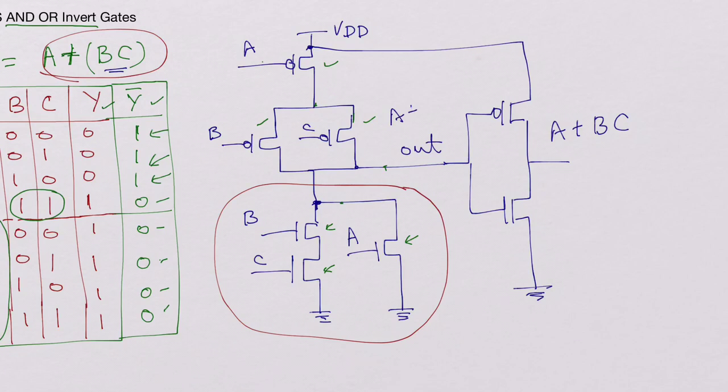So this would be your A plus B multiplied by C. At this point is A plus BC. This is out-bar and this is out.